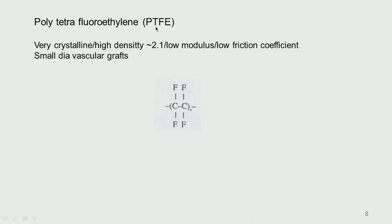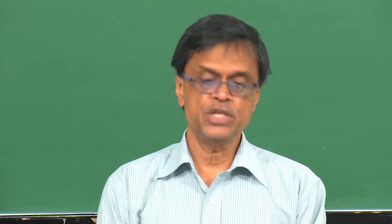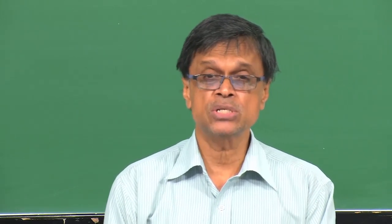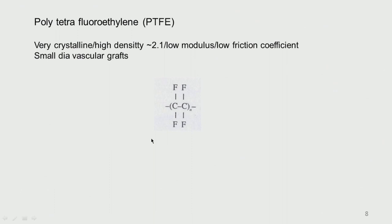PTFE — polytetrafluoroethylene — has many fluorine atoms. It is very crystalline, high density, low modulus, and has a low friction coefficient. It is very inert and used in small diameter vascular grafts. For large diameter (~2 mm) grafts, polyester is used; for small diameter vascular grafts, PTFE is preferred. PTFE is also used in Blalock-Taussig shunts.